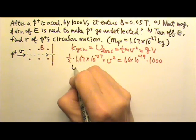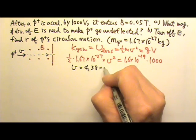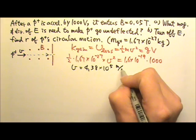If we solve for v, we'll get v equals 4.38 × 10^5 meters per second.